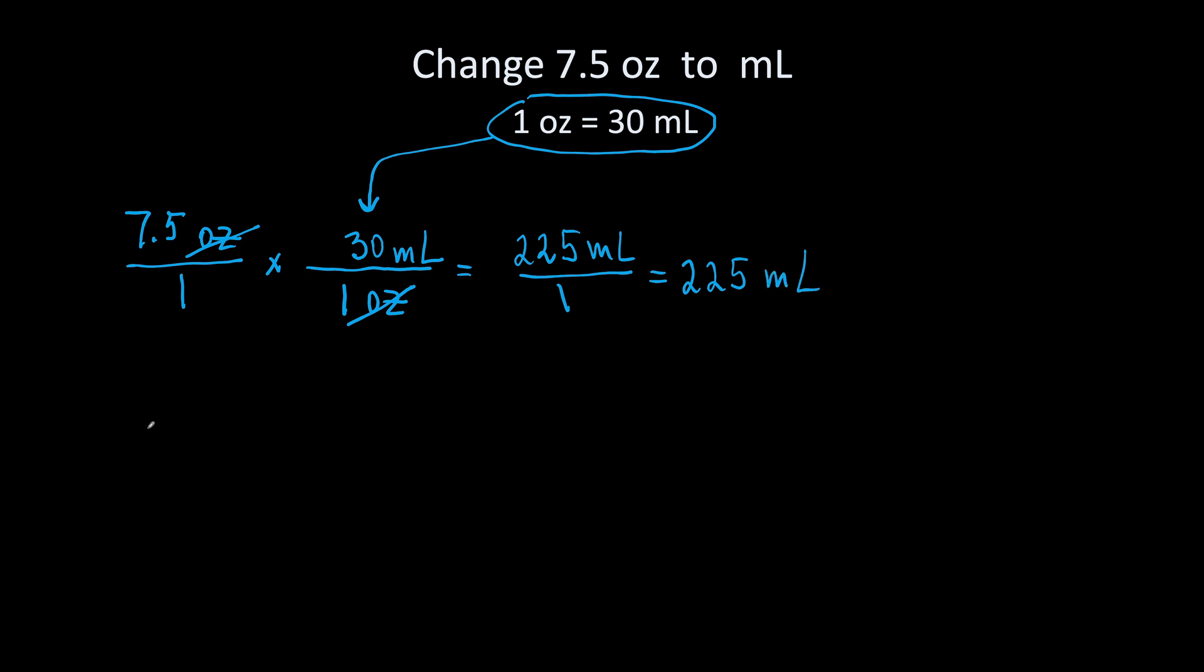The second way to solve is with a proportion. Let's write our ratio. We have 1 ounce over 30 milliliters. So we wrote our ratio as a fraction.